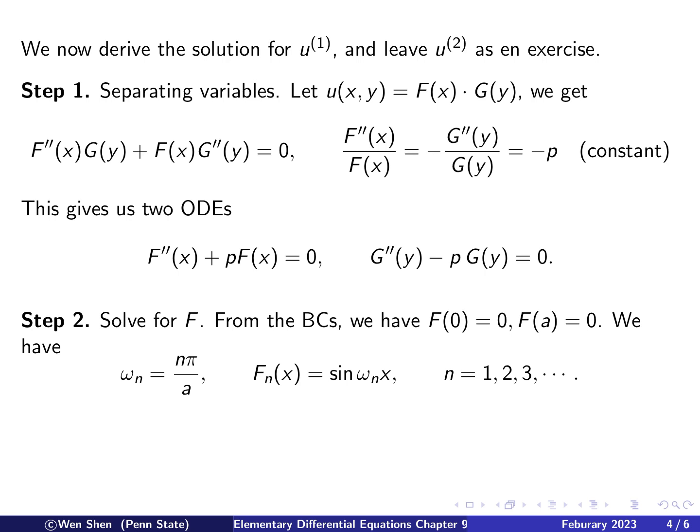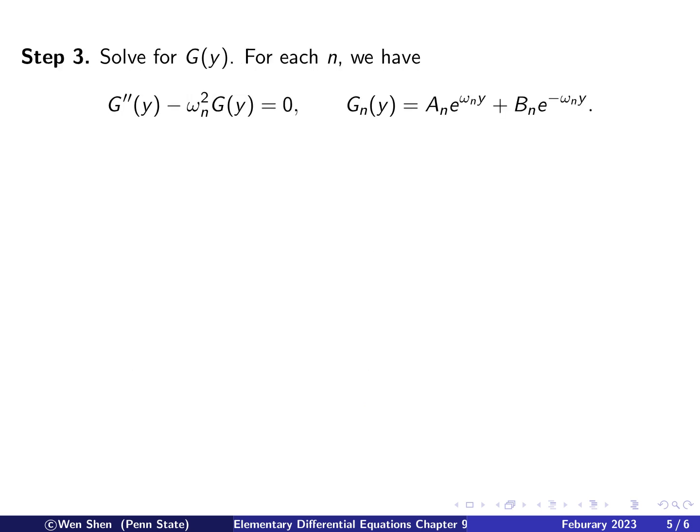So for f, we know that at x equals 0, it's 0, at x equals a is 0. So that's an eigenvalue problem, which we know the solutions. There are infinitely many eigenvalues and eigenfunctions. The eigenfunctions are sine functions. And then for each given n, we can find a solution for g, which is this equation, and then the general solution is an exponential growth combined with an exponential decay. So up to here, it's all the same.